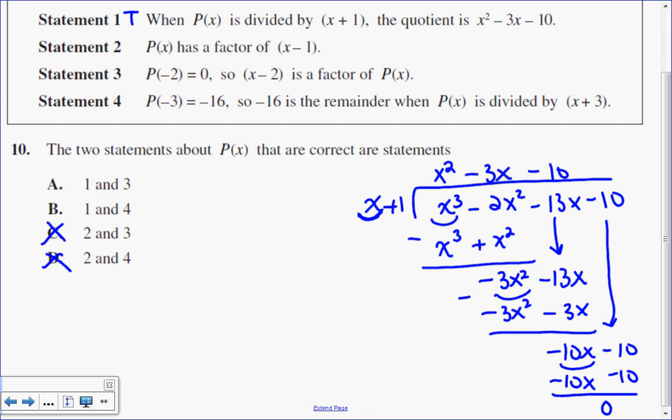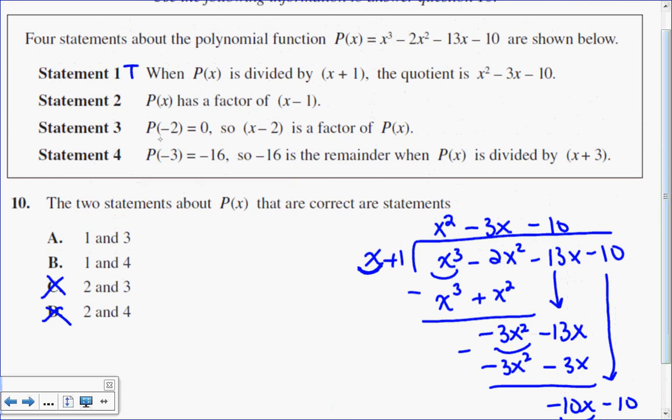So now I'm going to jump down to 3 and 4 to determine which one is the true statement. So statement number 3 says p of negative 2 is equal to 0, so x minus 2 is a factor. Let's first of all test to see if this is true.